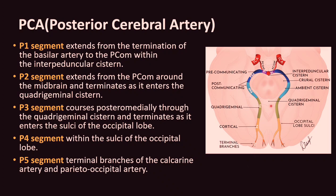The posterior cerebral artery arises as the terminal bifurcation of the basilar artery. P1 or the pre-communicating segment extends from the basilar artery bifurcation to the posterior communicating artery within the interpeduncular cistern. P2 or the post-communicating segment extends from the PCOM around the midbrain into the quadrigeminal cistern. P3 courses posteromedially through the quadrigeminal cistern into the occipital lobe sulci. P4 lies within the sulci of the occipital lobe. P5 comprises the terminating branches: the calcarine artery and the parieto-occipital artery.